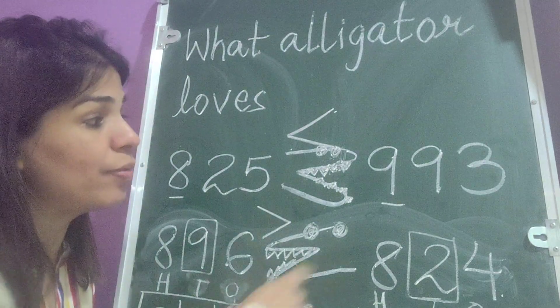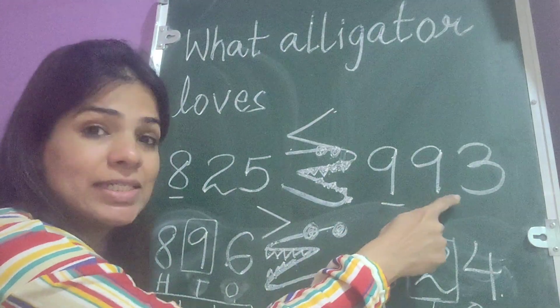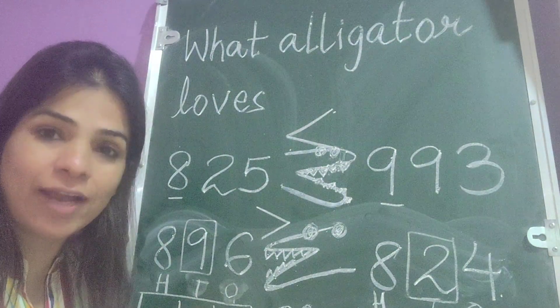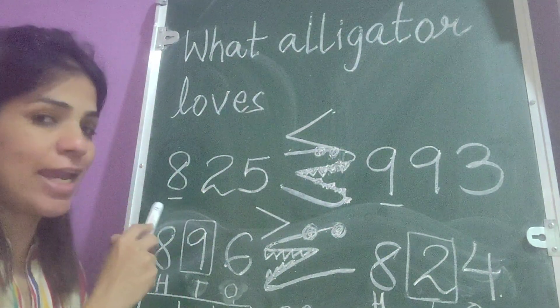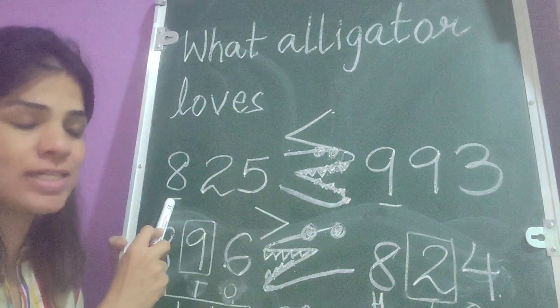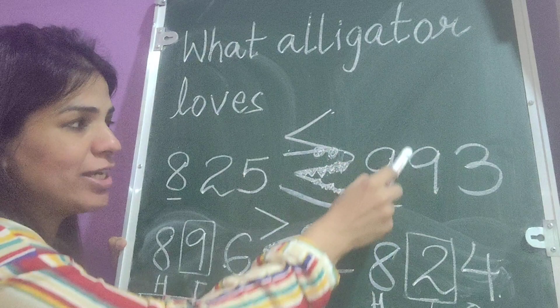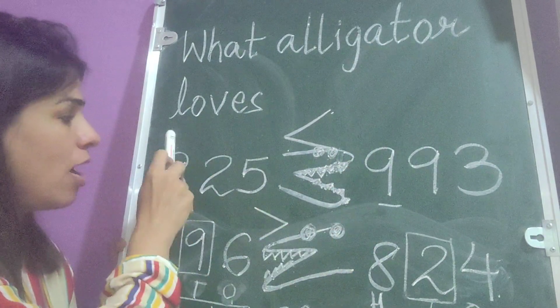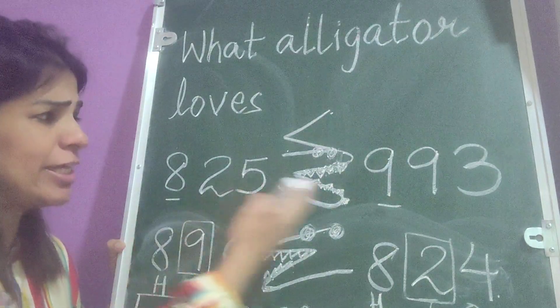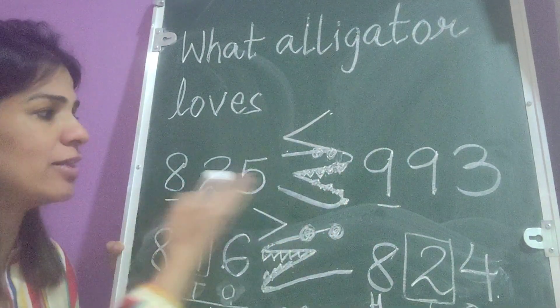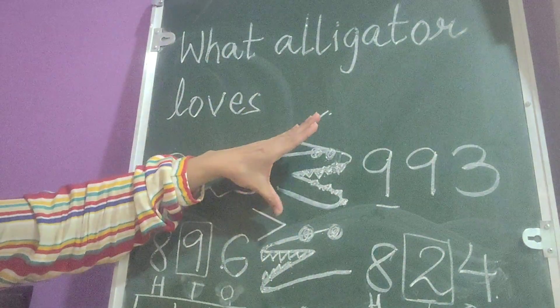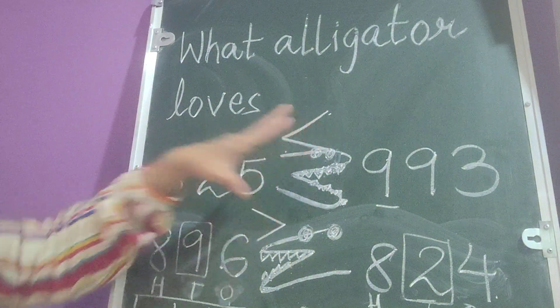My next number is 993. So when we have to compare what we have to do, first take the bigger place value digit that is 8, and here the bigger place value digit that is 9. The hundredth place value digit and do the comparison. Obviously, if 9 is bigger than 8, the whole number becomes bigger, and thus the alligator eats the bigger number.